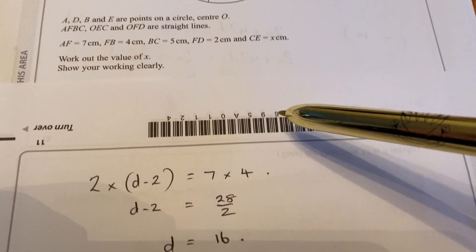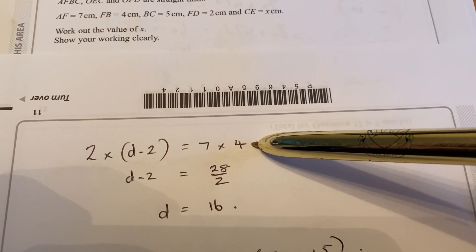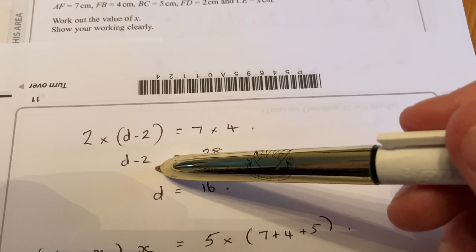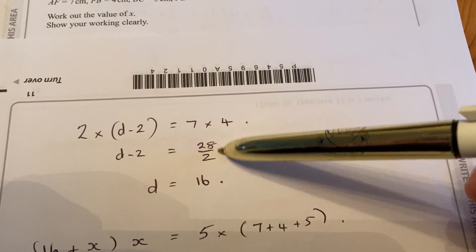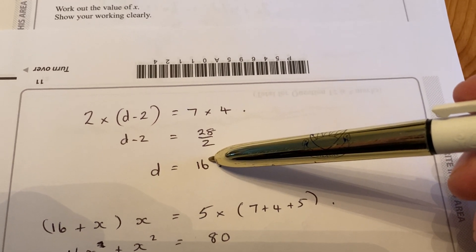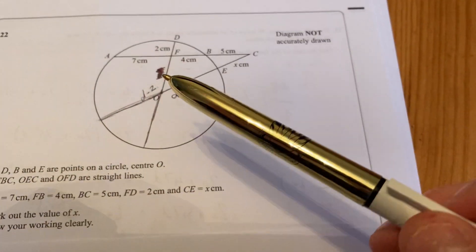So the bits on the same line multiplied together equal the bits multiplied together on the other chord. So 7 times 4 equals 2 lots of D minus 2. So D minus 2 would be 14 here, but when you add on 2, you get that the diameter is 16. So we'll go back to the diagram now.